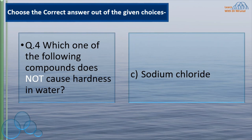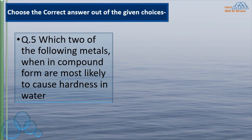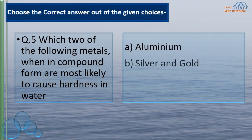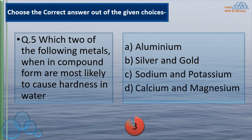Magnesium chloride, calcium chloride, magnesium sulphate, and calcium sulphate will cause hardness in water when dissolved. Which two of the following metals, when in compound form, are most likely to cause hardness in water? Aluminium; silver and gold; sodium and potassium; calcium and magnesium. The correct answer is calcium and magnesium.